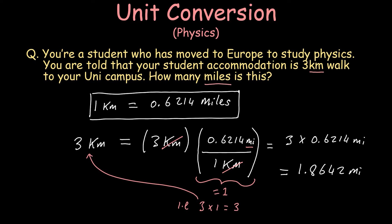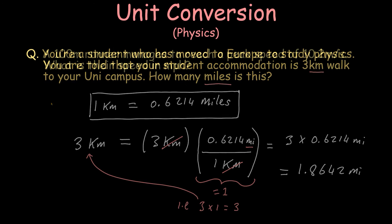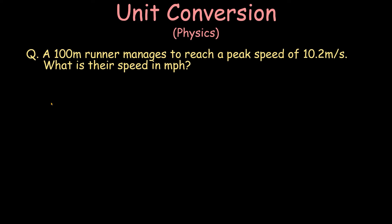This was a simple example. The next example requires converting multiple times to get the desired units. The question is: a 100-meter runner manages to reach a peak speed of 10.2 meters per second. What is his speed in miles per hour?